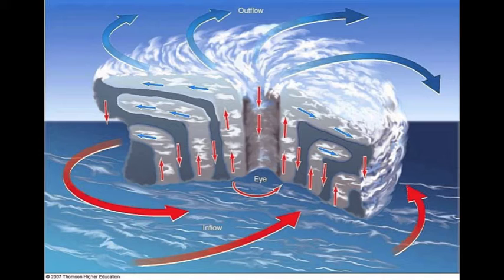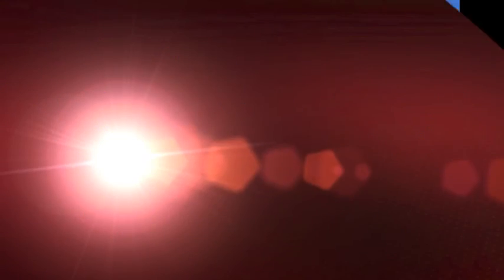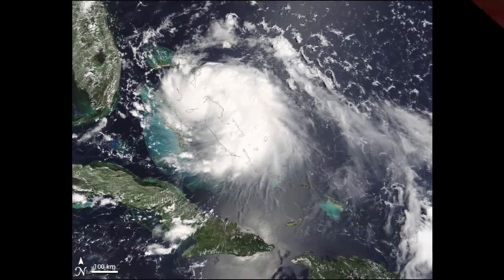While the hurricane, classified as Category 1, moved into the Gulf over Florida as a thunderstorm, the water was warm enough to sustain the hurricane to a Category 5 with sustained winds of 160 miles per hour and a storm surge of about 40 feet tall.